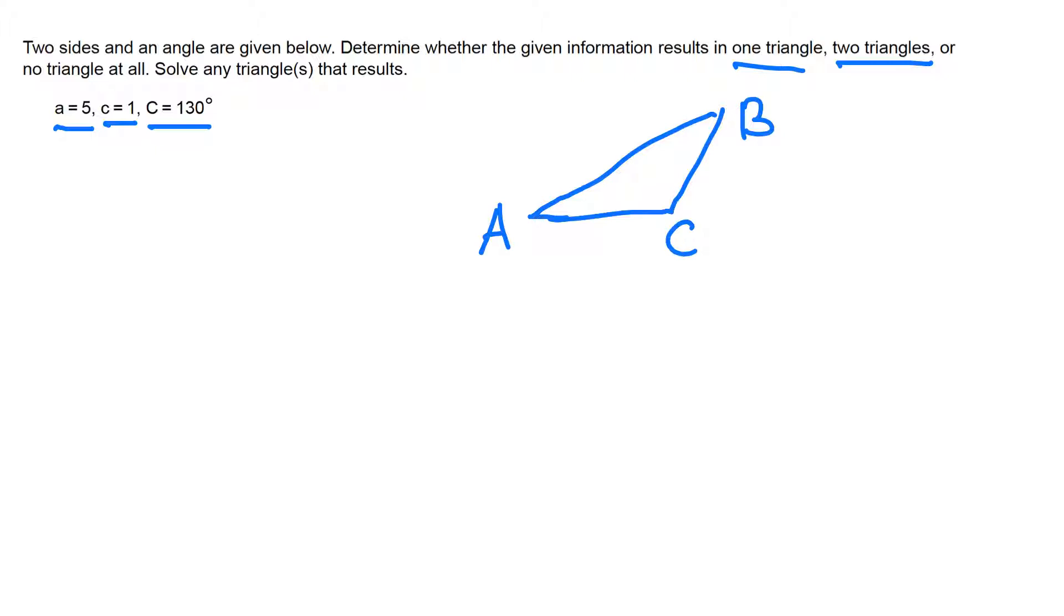Opposite of angle C or vertex C is lowercase c which is 1, and opposite of A is lowercase a which is 5. Now if there is a triangle, we need to find angle B, angle A, and lowercase b. This angle C is 130° and side c are given.